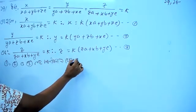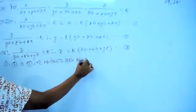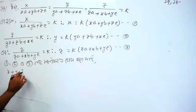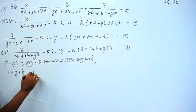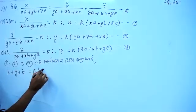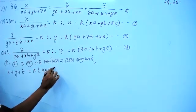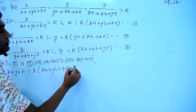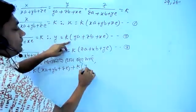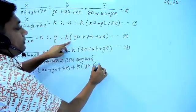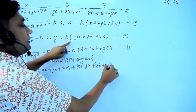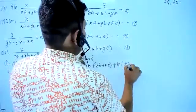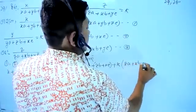x plus y plus z equals k into x a plus y b plus z c, plus k into y a plus z b plus x c, plus k into z a plus x b plus y c.